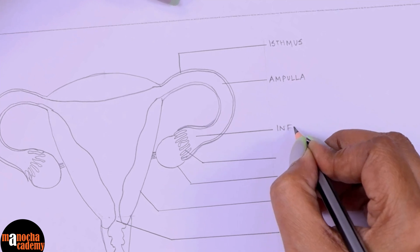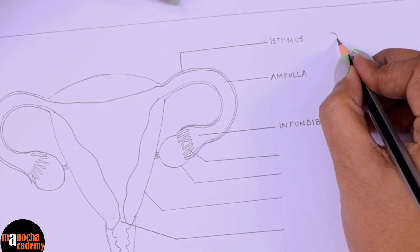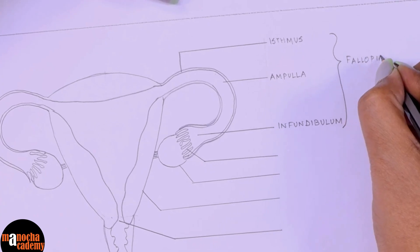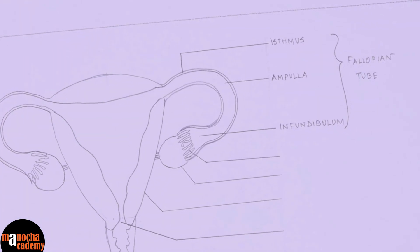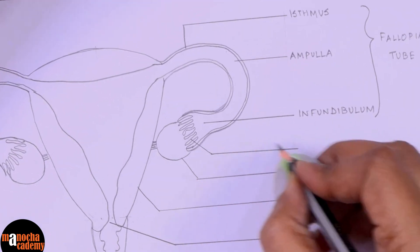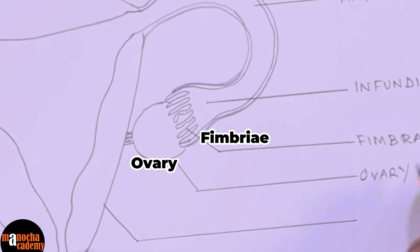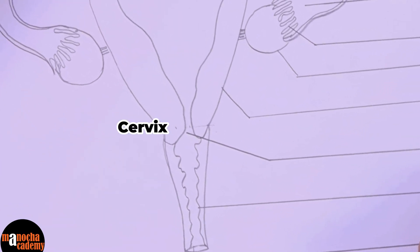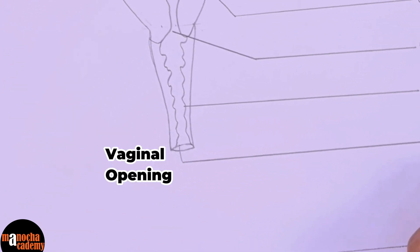This part is known as the infundibulum. Once we have labeled these three parts, we will just put a bracket and label this as fallopian tube, because these three are parts of the fallopian tube — the main structure is fallopian tube. Then these finger-like projections are known as fimbriae. Then we have the ovary here, and the uterus. This opening of the uterus is called the cervix, so we will label the cervix separately. This is the vagina, and finally we have the genital opening or vaginal opening.